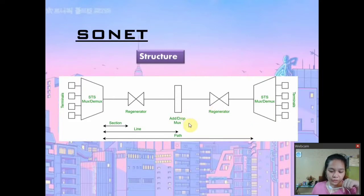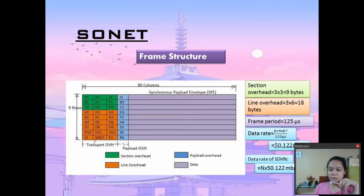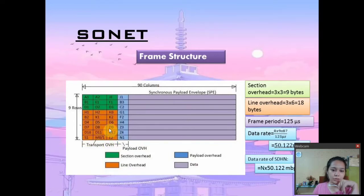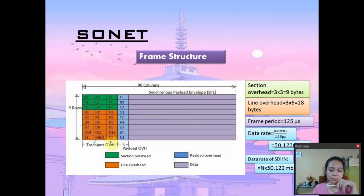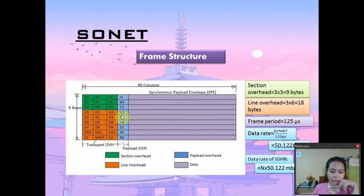This is the entire structure of the frame used to send information. The first column is the transport overhead. The first three rows are called the section overhead and the last six rows are called the line overhead. The rest is called the payload overhead or synchronous payload envelope. Transport overhead is also called admin overhead and is divided into section overhead and line overhead. The section overhead is 3 by 3, equaling 9 bytes, with 3 rows and 3 columns. It is used for framing, error monitoring, and management.